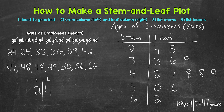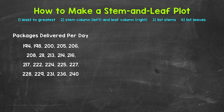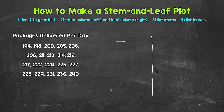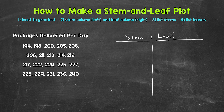That was our two-digit example. Let's move on to our three-digit example. We have the number of packages delivered per day by a delivery person over the past 20 days. The data is already in order from least to greatest, so we can move on to creating the stem and leaf plot. We'll start with a vertical line and then a horizontal line — the left column is the stem column and the right column is the leaf column.